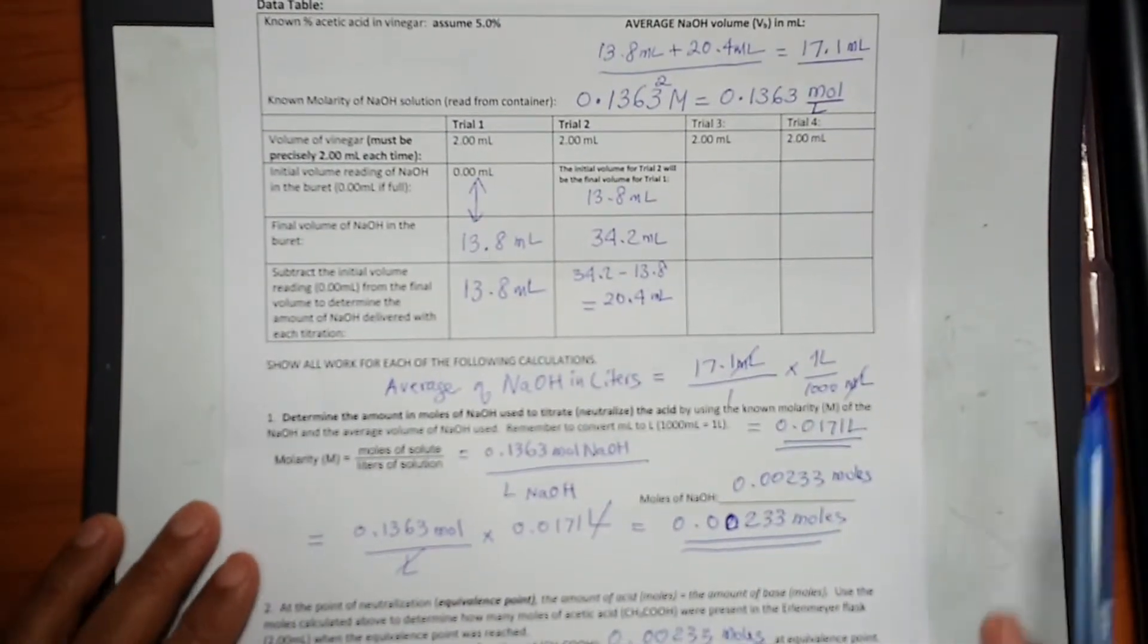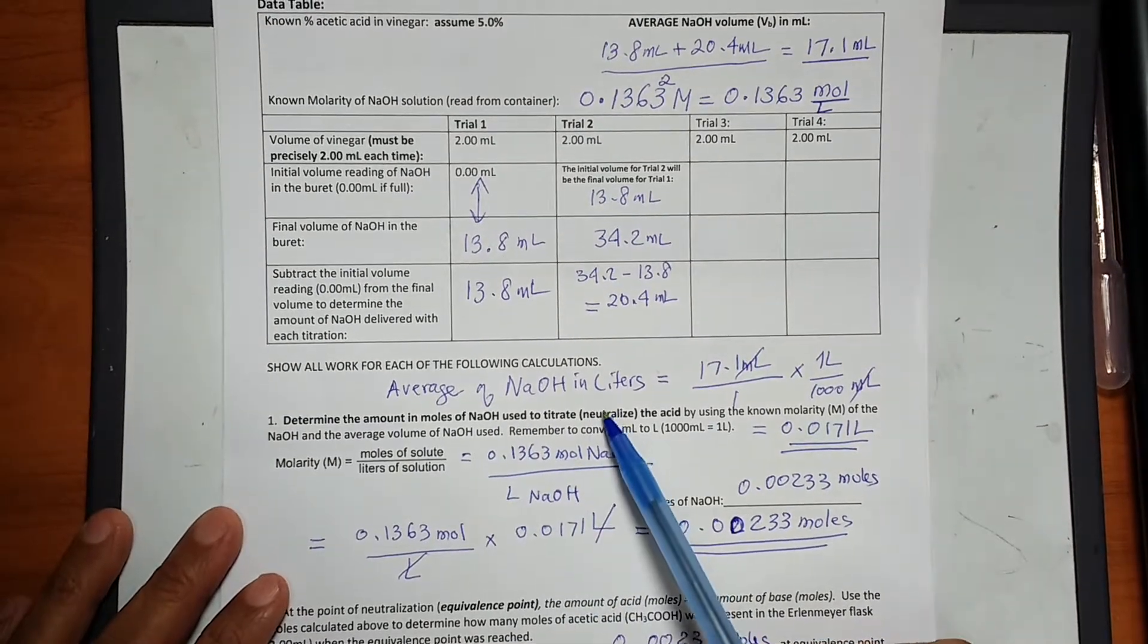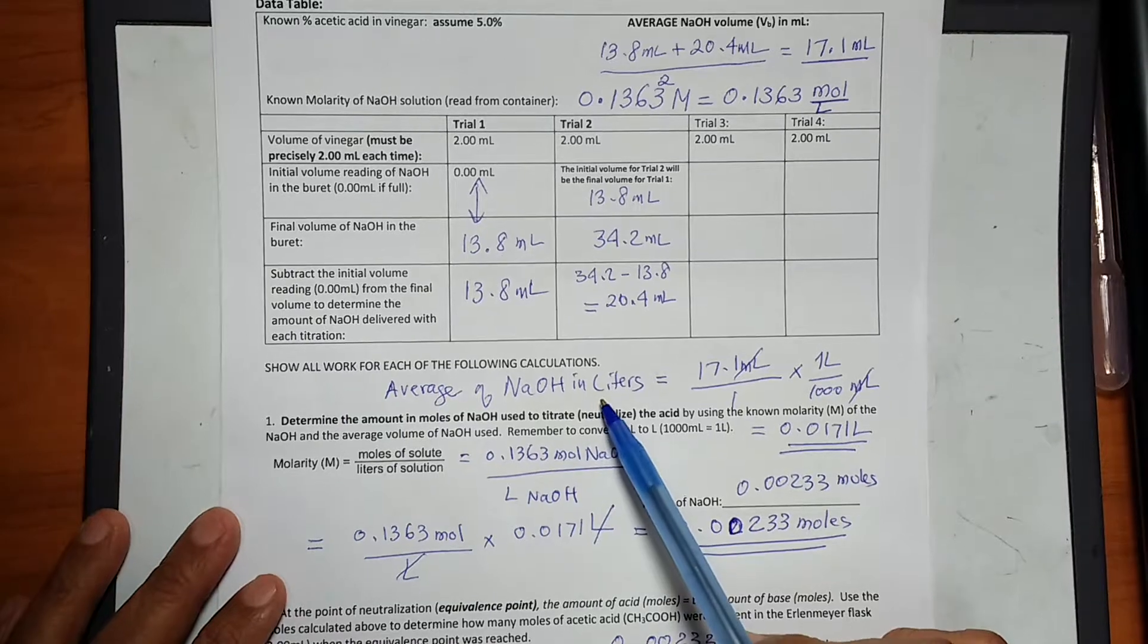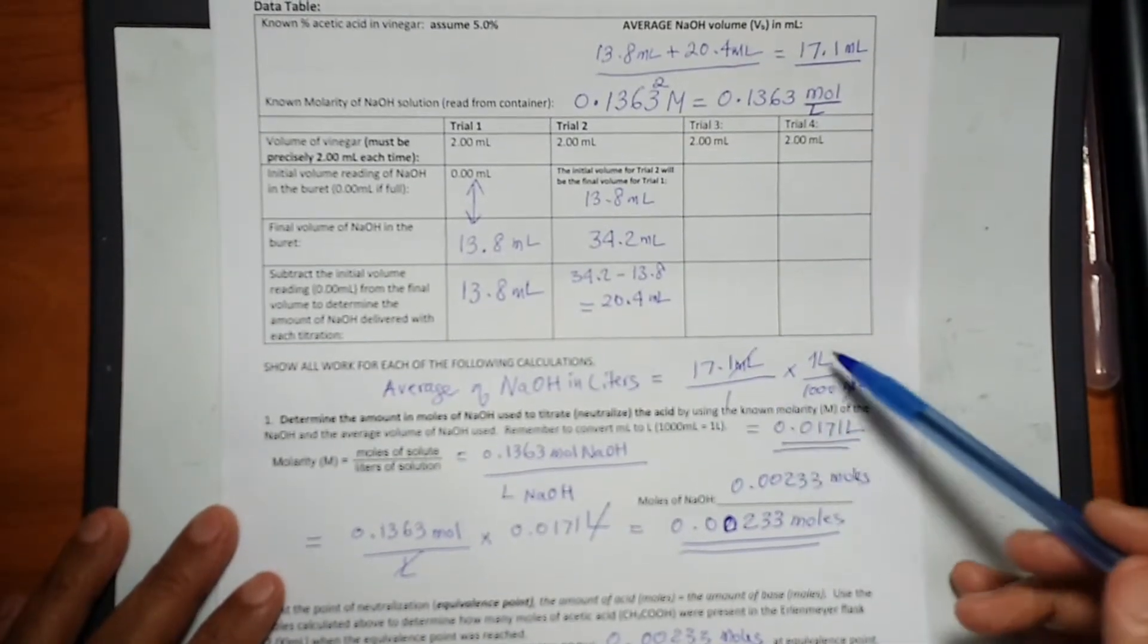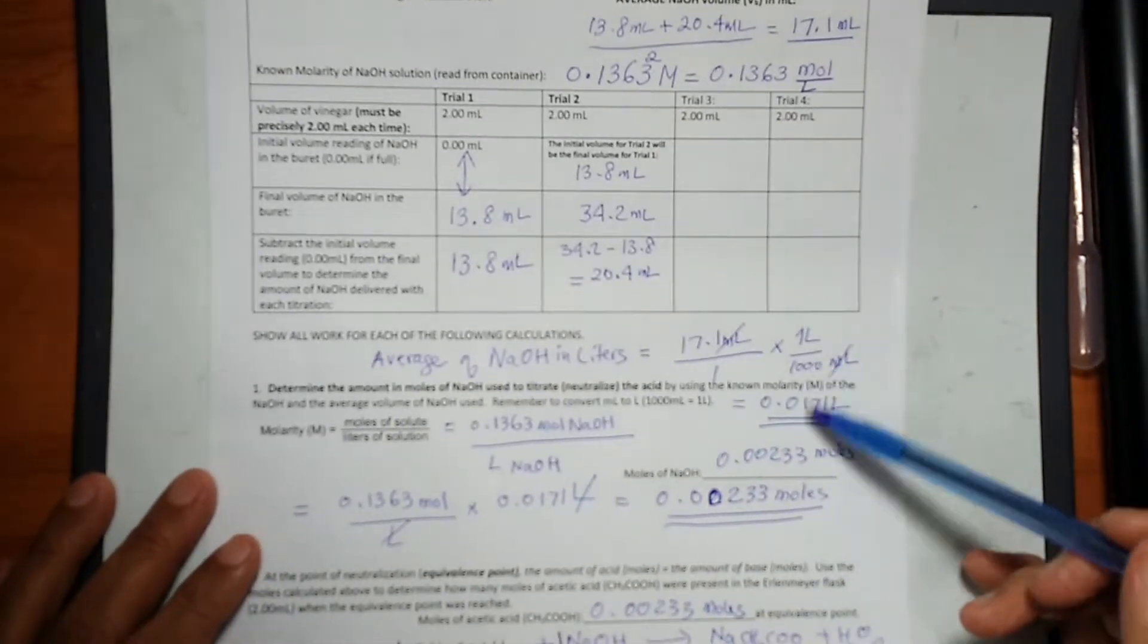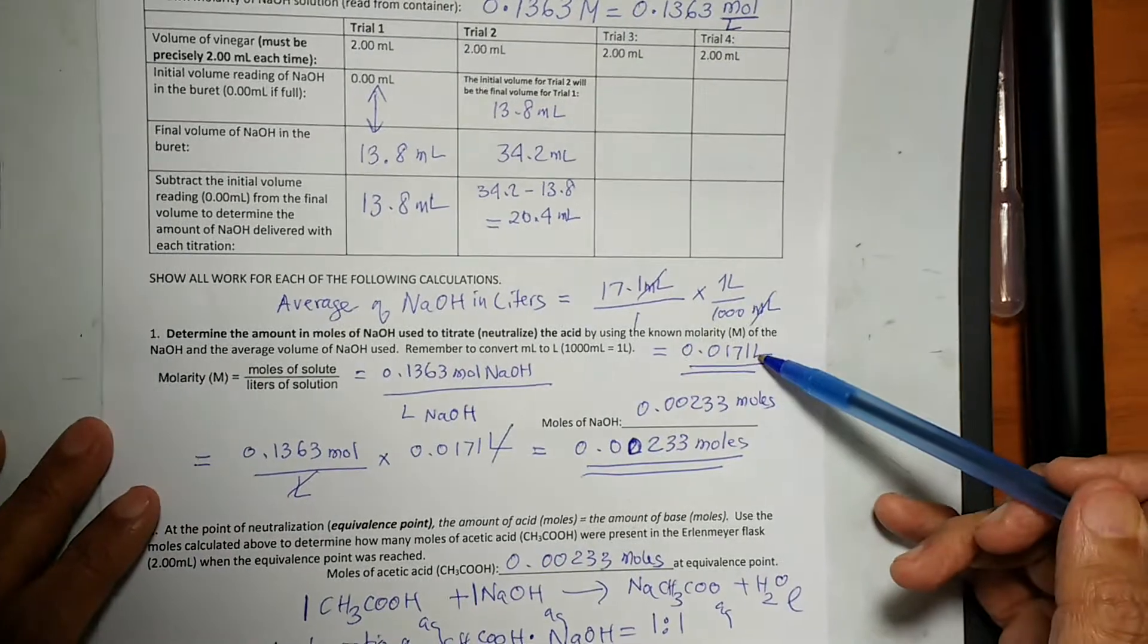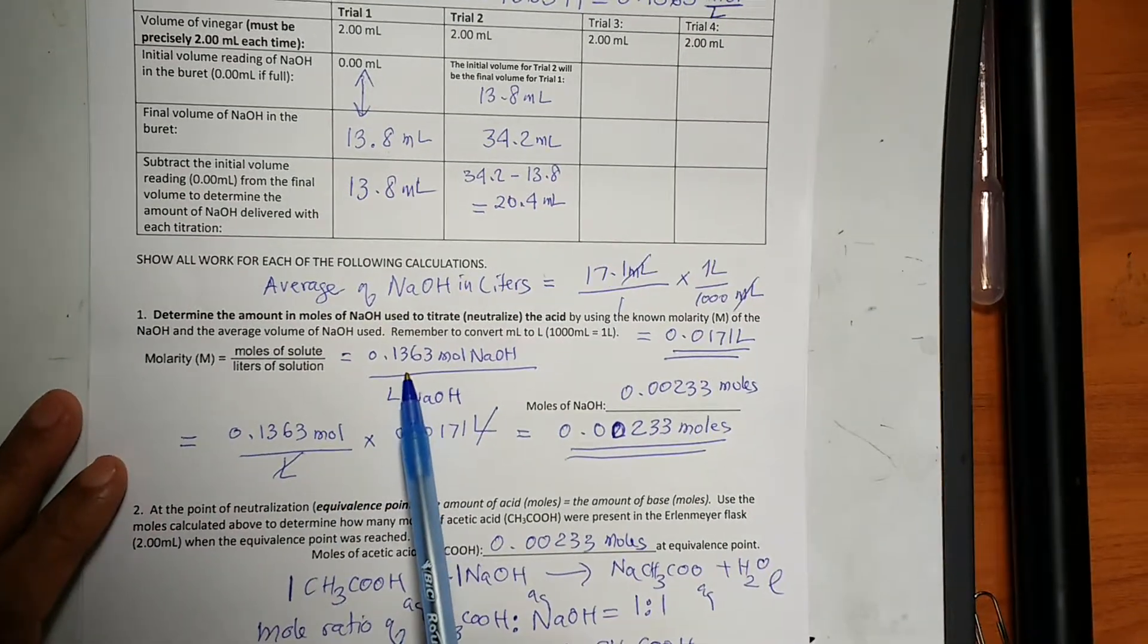First, we have to take the average of the sodium hydroxide volume in liters. So we have the average here, and then we convert the average into a liter, from milliliter into liter, and it comes to be 0.0171 liter.